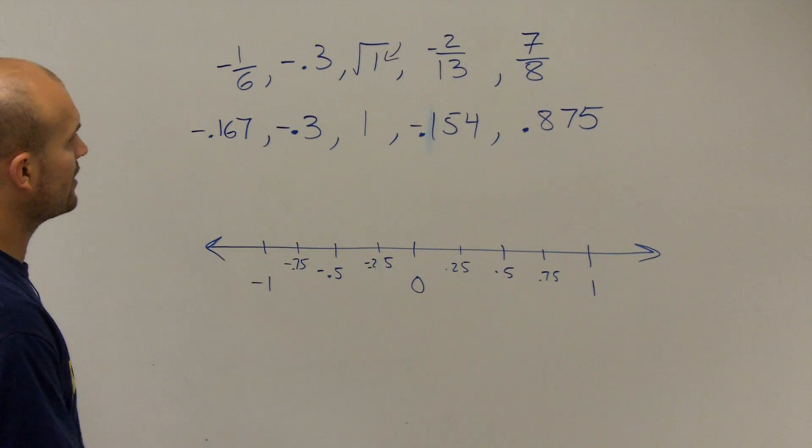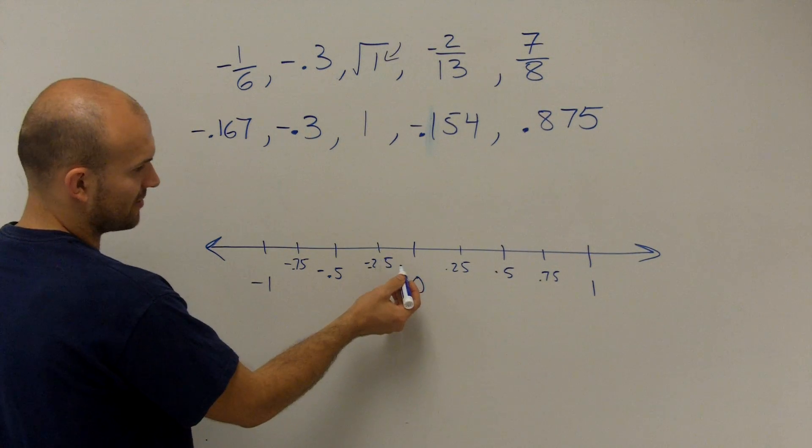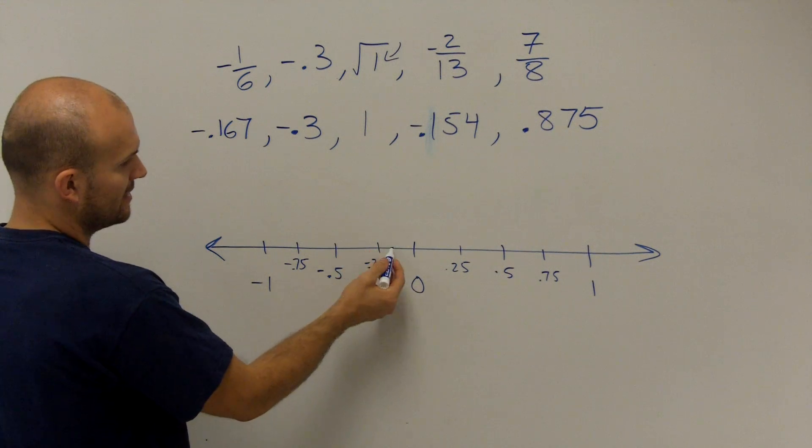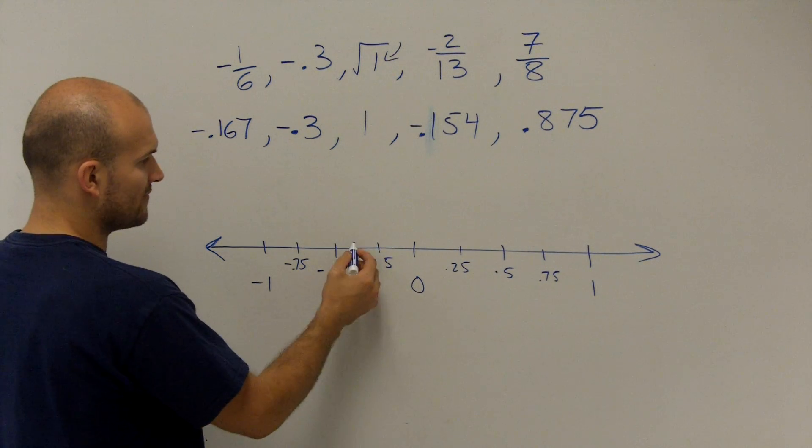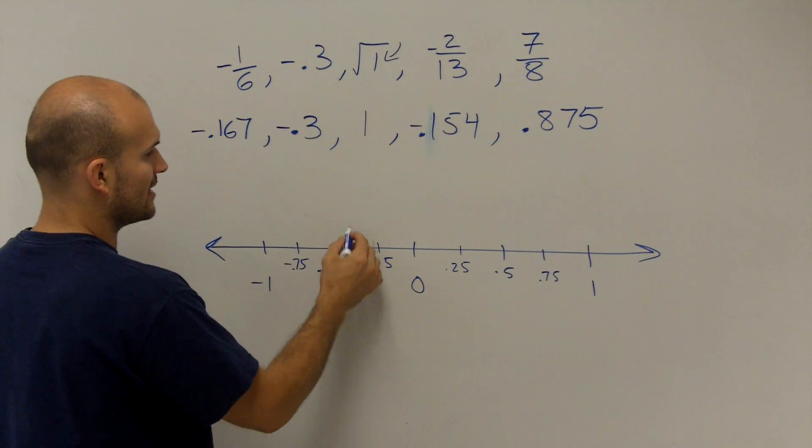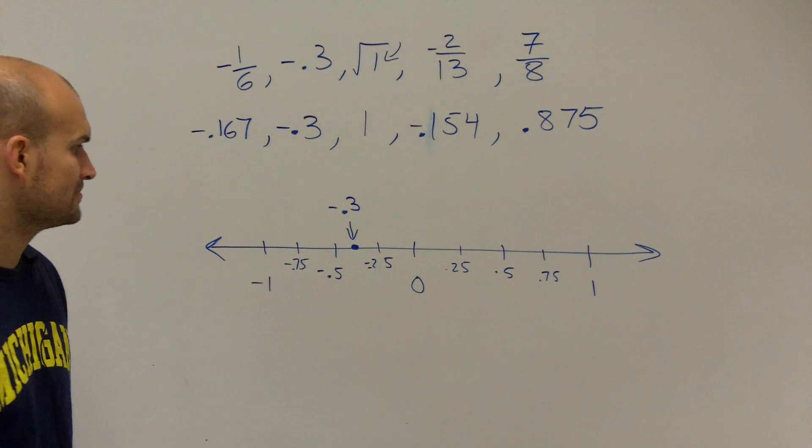So let's go and look at where would negative 0.3 be. Well, I'm not going to get an exact placement, but negative 0.3 is going to be somewhere between negative 0.25 and negative 0.5. So I'll just label it right there and say negative 0.3. It's going to be roughly somewhere right around there.